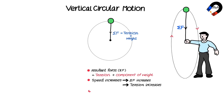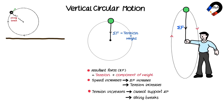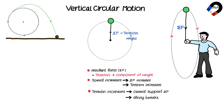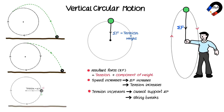If the tension increases until it can no longer support the resultant force, the string breaks and the ball escapes from the circular path along the tangent line at the point where the string breaks. If the string breaks at point A, the object escapes along the tangent at point A and is then pushed downward by its weight, causing a curved path. If the string breaks at point B or point C, the object escapes from the circular path as shown on screen.